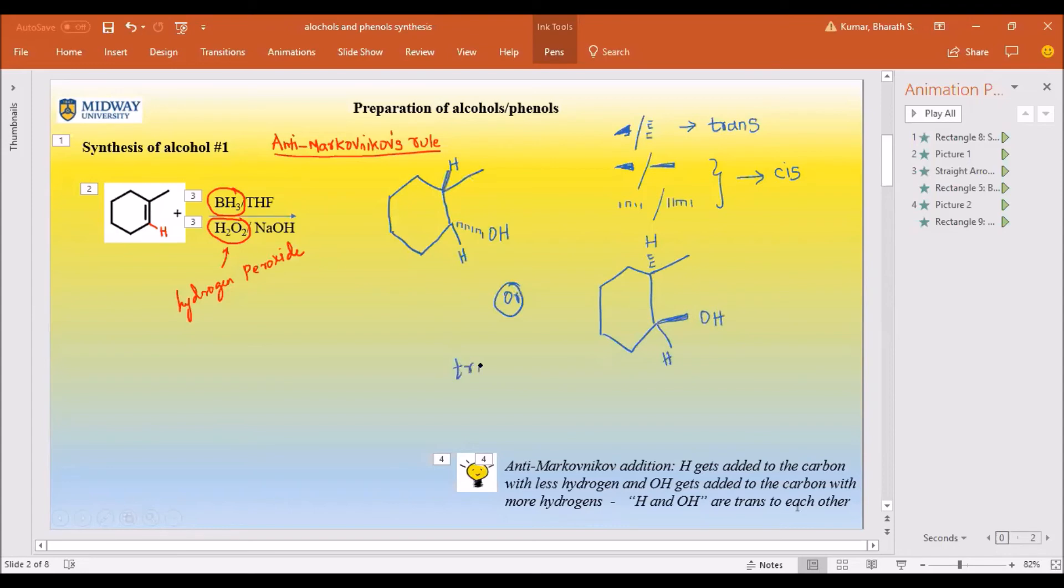Trans means one is open, one is closed. Cis means both are open or both are closed, and that is cis. See, I have not switched the position of the hydrogen and the OH. All I have done here is: here I kept the hydrogen closed and OH open; here I've given the OH closed and kept the hydrogen open. Both are correct products.